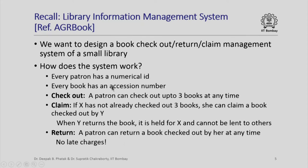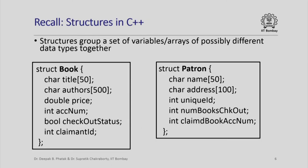In trying to understand how to design the library information management system, we observed that there were two key entities participating in its functioning: the patron entity and the book entity. All operations were basically interactions between these two entities. We had defined these two entities — book and patron — as C++ structures. The book structure had the title of the book, the authors of the book, and the book's price.